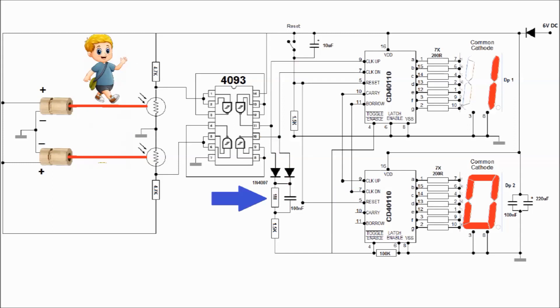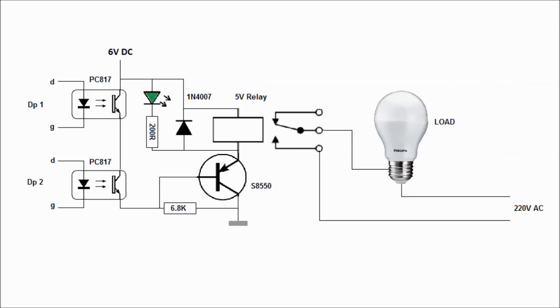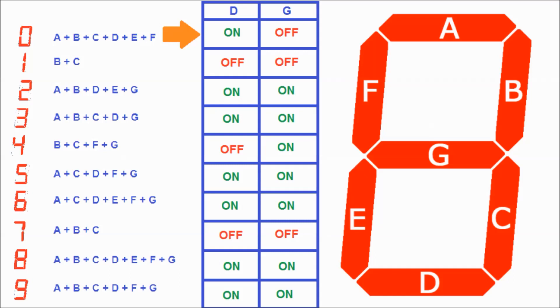The last part of this circuit is used to run the load when the counting number is more than zero. But how can this circuit detect the zero number on the display? Here I use a clever trick: the zero number on the seven segment is the only number that the D segment turns on and the G segment turns off at the same time. So when both seven segments are showing the zero number, the optocoupler turns on and deactivates the relay.